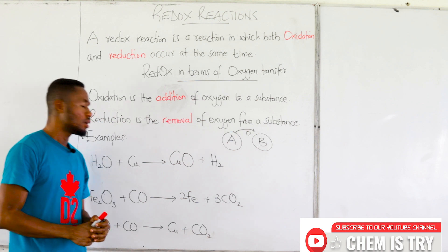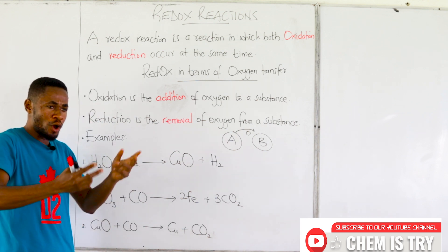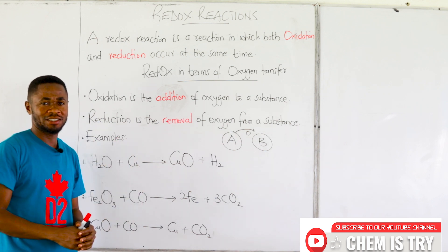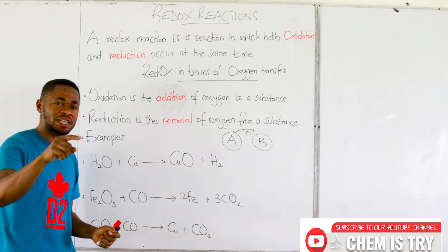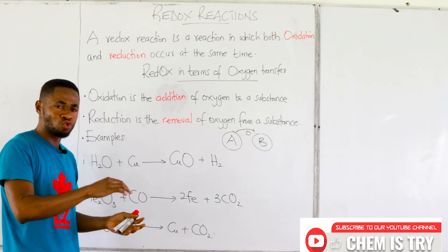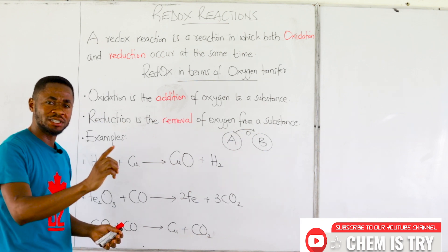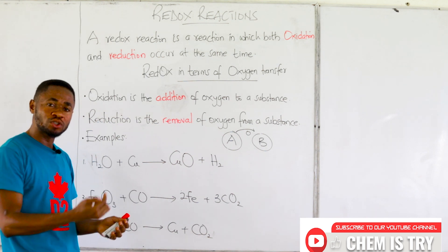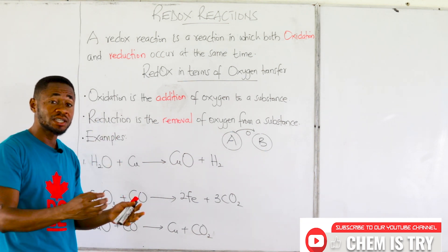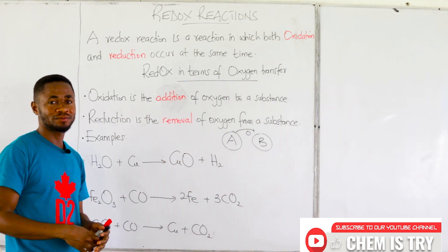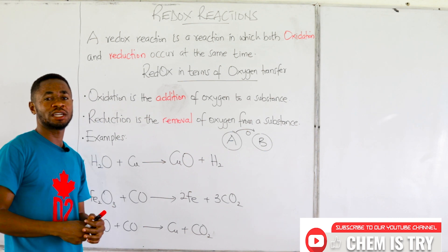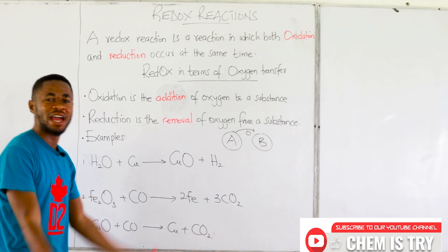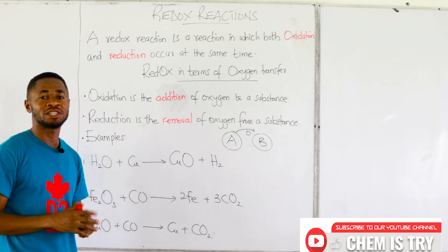In the second scenario, both substances at the reactant side have oxygen. But when you go to the product side, one substance's oxygen decreases and the other's oxygen increases. The one whose oxygen decreased has had oxygen removed from it and given to the one whose oxygen increased — so oxygen has been added to that one.